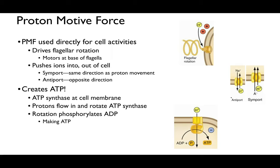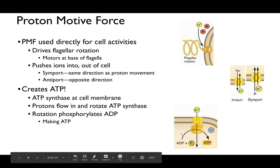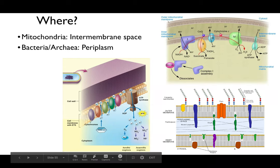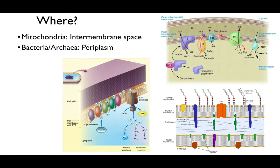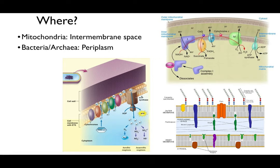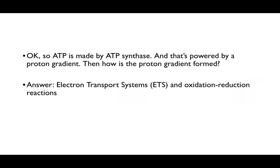In mitochondria this occurs in the intermembrane space, but in our bacteria and archaea it occurs in the periplasm—the space between membranes. In gram-negative bacteria, the periplasmic space is between the outer membrane and the inner membrane; in gram-positives, it's between the thick cell wall and the inner cellular membrane. ATP is made by ATP synthase powered by proton gradients—but how do we form a proton gradient? The answer is the electron transport system, via a series of oxidation-reduction reactions.